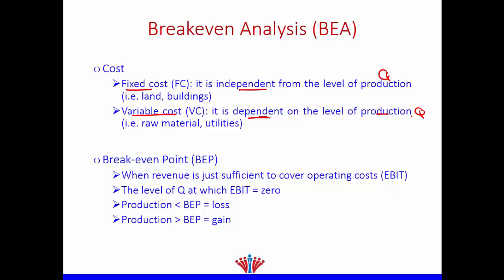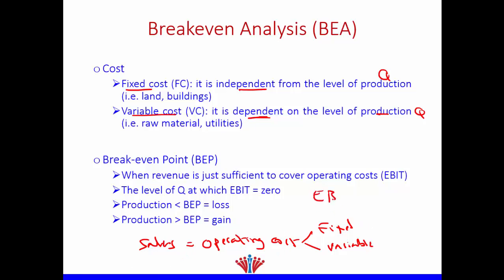If we look at our break-even point — what do we mean by break-even point? Break-even point means that our sales is equal to operating cost. Operating cost is fixed cost plus variable cost. Therefore, if our sales is equal to operating cost, this gives us our break-even point, which means our earnings before interest and tax (EBIT) is equal to zero.